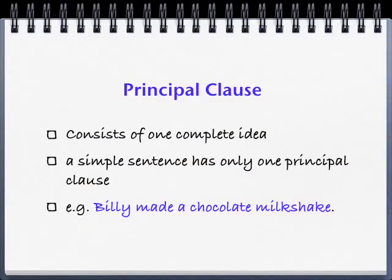A principal clause consists of one complete idea. A simple sentence has only one principal clause. For example: 'Billy made a chocolate milkshake' is a simple sentence, and it is an example of a principal clause.